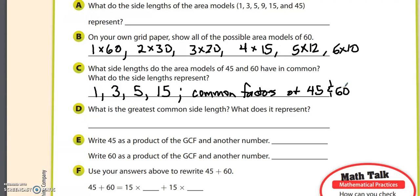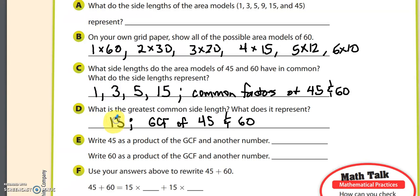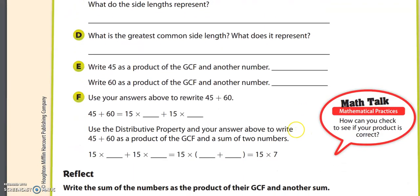Question D says: what is the greatest common side length, and what does it represent? Well, it's 15 — it's the biggest number there. And what does it represent? It represents the greatest common factor — the GCF — of 45 and 60. It's really important that you identify 15 as the GCF because we're going to use that for the next few questions.